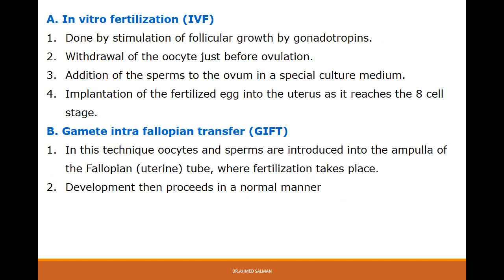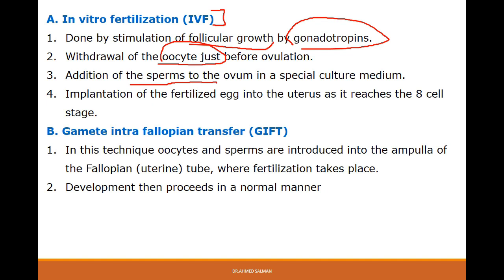Artificial fertilization: there are many methods. First, in vitro fertilization or IVF. Step one: stimulation of follicular growth by gonadotropin hormone. Step two: withdrawal of the oocyte before ovulation. Then, addition of sperm to the oocyte and leaving it in a special culture to give a chance for fertilization to happen. Then, after fertilization, the fertilized egg will be implanted into the uterus. The second type is called gamete intrafallopian transfer or GIFT.